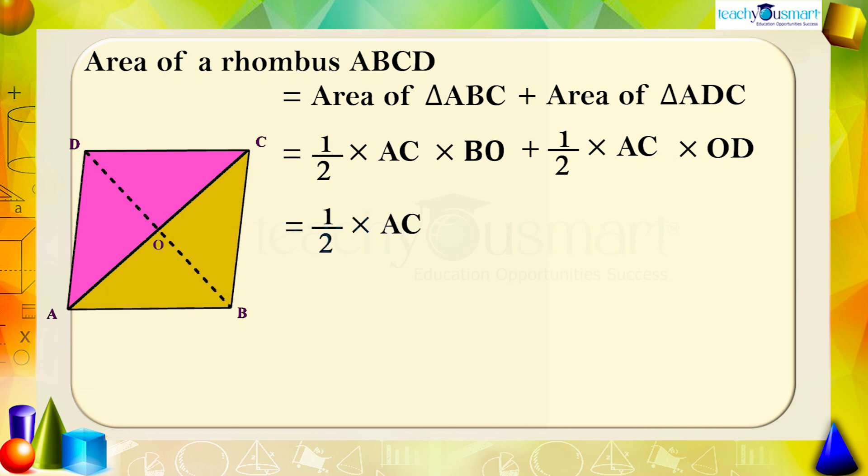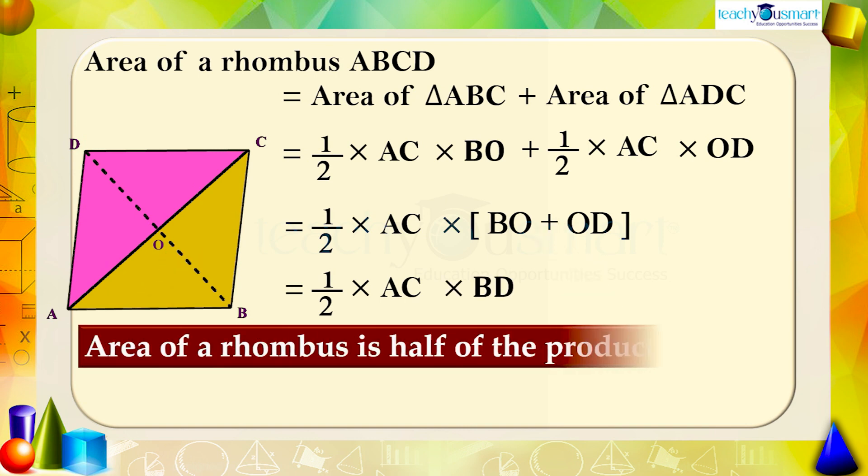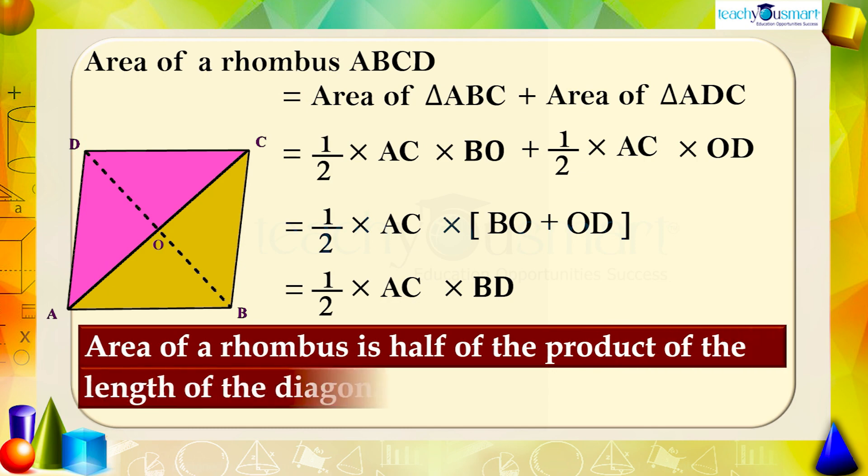This equals 1/2 × AC × (BO + OD), which equals 1/2 × AC × BD. That is, the area of a rhombus is half of the product of the length of the diagonals.